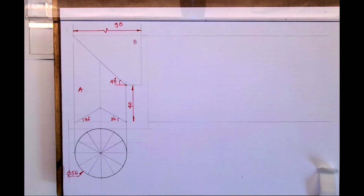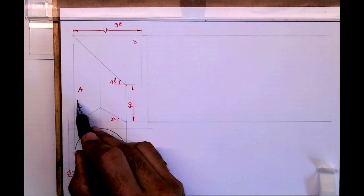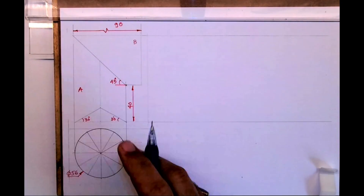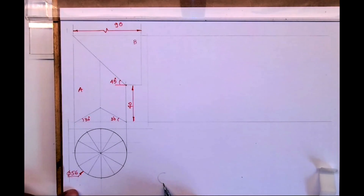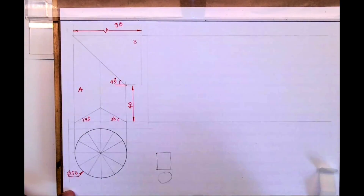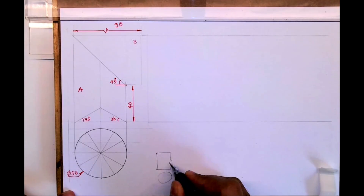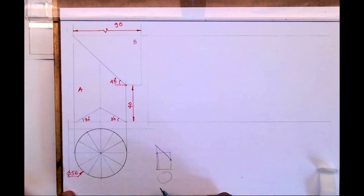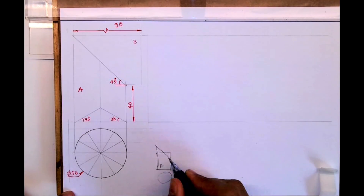Welcome to technical drawing. Today we'll see how to draw the development of pipe A. This is an ICAC board technical drawing application question paper from 2015. First, we'll draw a circle and divide it into 12 parts because the diameter is 56. Then we'll extend it — draw the circle and a rectangle. We don't know the height of the rectangle, we only know 40, so I'll mark 40 and from there draw a 45-degree line. Wherever it cuts that line will be the height. This is pipe A.